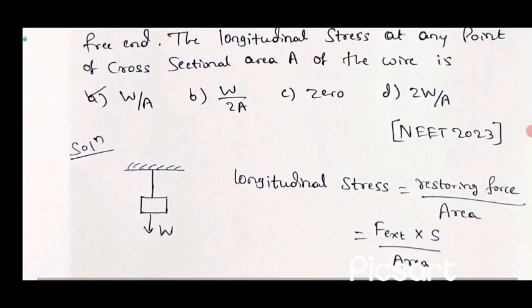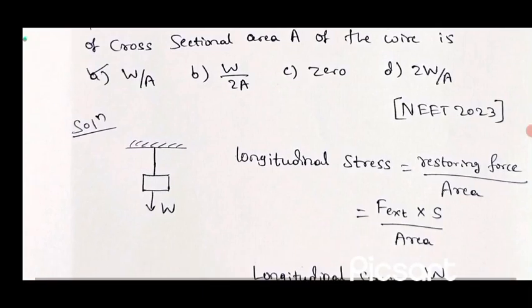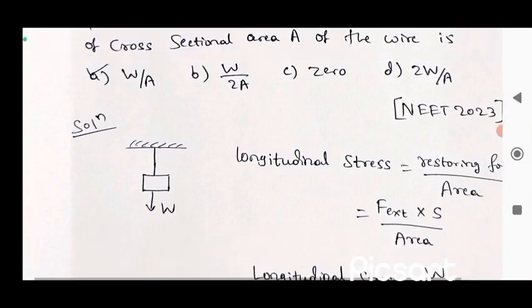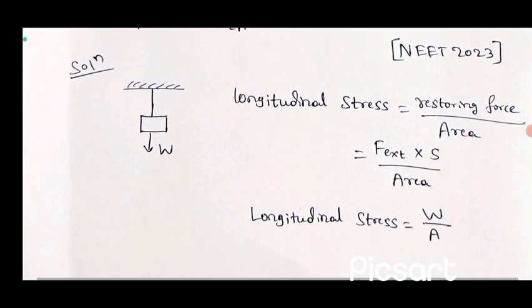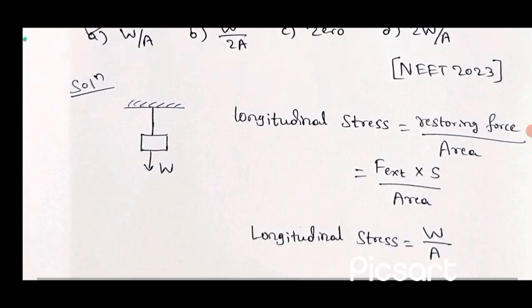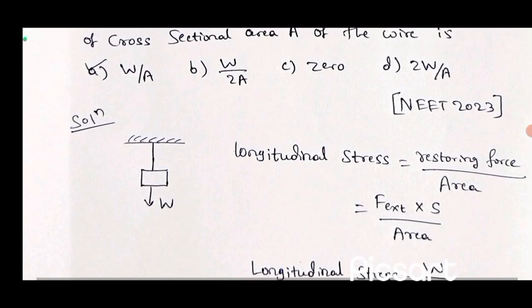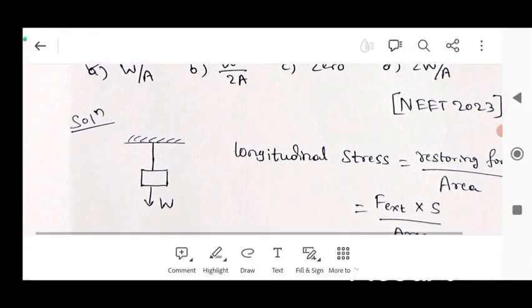Longitudinal stress equals restoring force by area. Here the weight W acts downward due to gravity, so force is W. Therefore longitudinal stress equals W by A. The correct answer is option A: W by A.